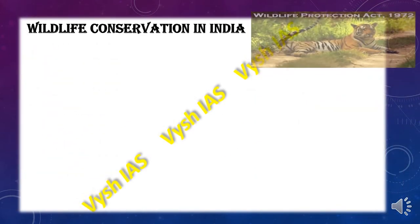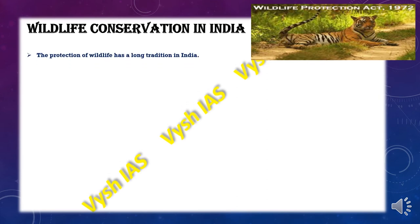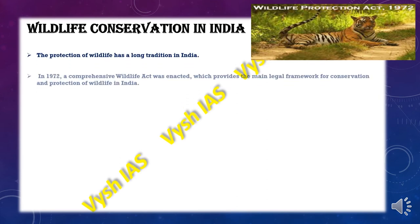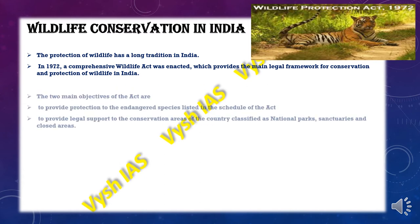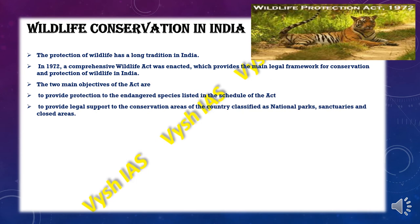Wildlife conservation in India has a long tradition. In 1972, a comprehensive Wildlife Act was enacted, which provides the main legal framework for the conservation and protection of wildlife in India. The two main objectives are to provide protection to endangered species listed in the schedule of the act, and to provide legal support to conservation areas classified as national parks, sanctuaries and closed areas, which contain core, periphery and buffer zones.